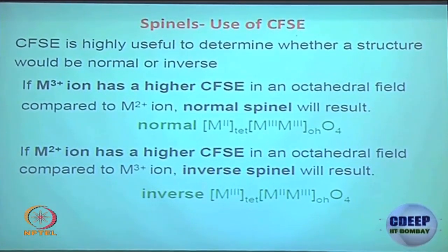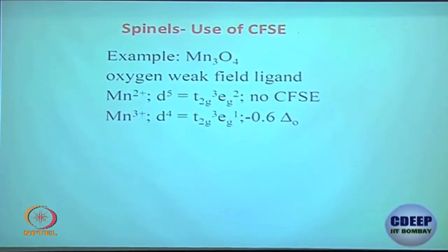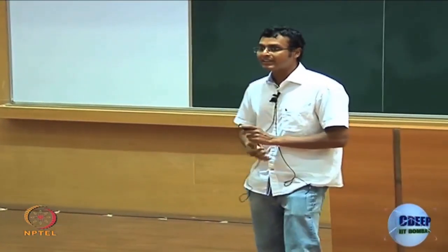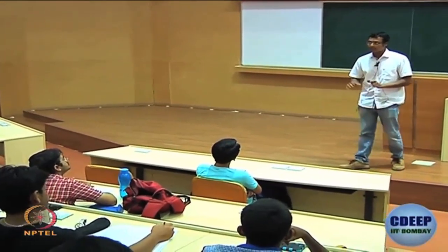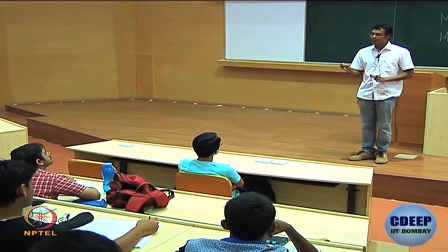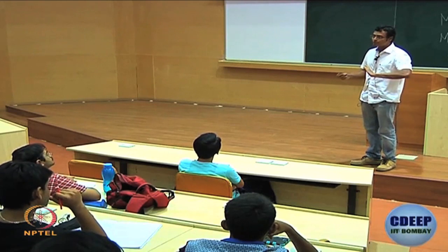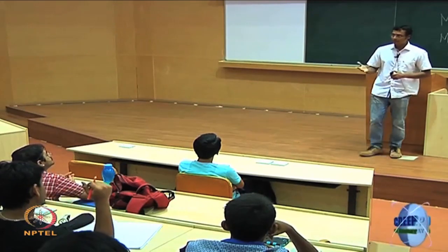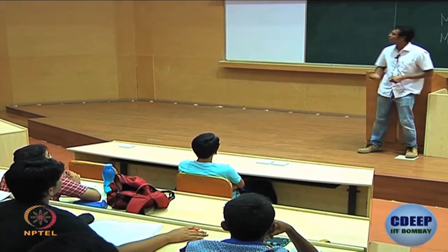Do not calculate CFSE for M3+ in tetrahedral geometry — that is a common mistake. Just find the octahedral CFSE for M3+ versus M2+ for a given metal system. CFSE for tetrahedral is usually low, about 4/9 of ΔO. Let me give you an example to make this clearer.